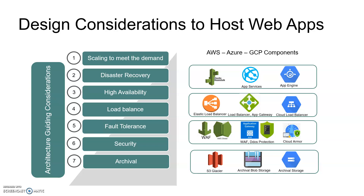Security is one of the most important aspects when hosting an application. Every cloud provider has their own components to tighten security levels. AWS provides WAF (Web Application Firewall) and AWS Shield to protect from DDoS attacks. Similarly, Azure has a WAF and DDoS protection. GCP provides Cloud Armor for both WAF and DDoS protection.